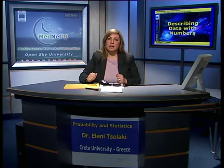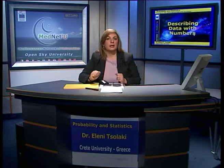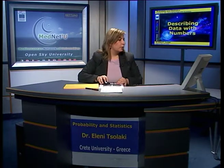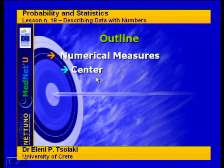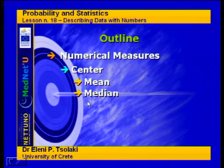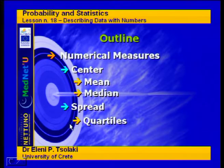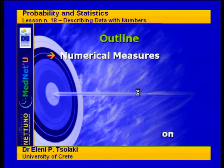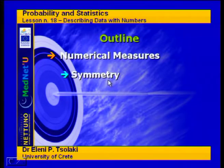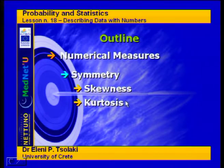In particular we are going to see how to describe quantitative data with numbers. The numerical measures we will see are measures for the center of the data. We will see how to calculate the mean and the median, how to measure the spread of the data, how to calculate quartiles and the standard deviation, and finally how to measure the symmetry of the data. We are going to learn how to calculate skewness and kurtosis.